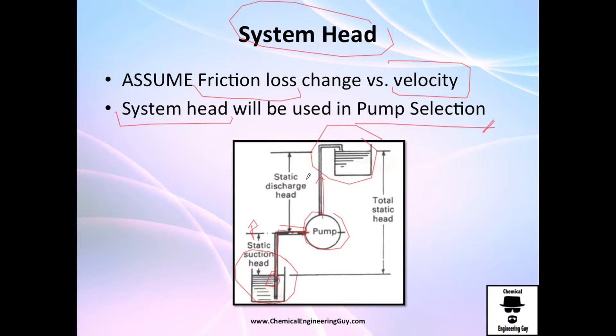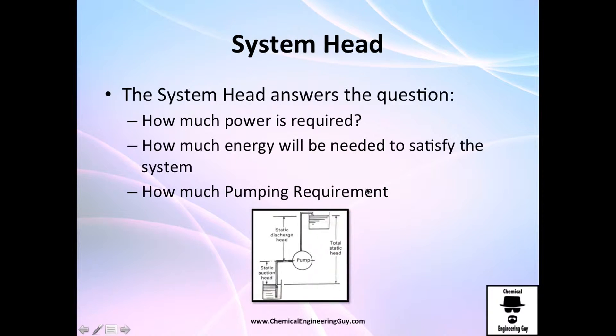Let's say the pressures are the same so we cannot count with that. Velocities are zero. The only thing that is moving here is the static head and the friction. So what's this head? What's the system or the system head? What's going on with this?